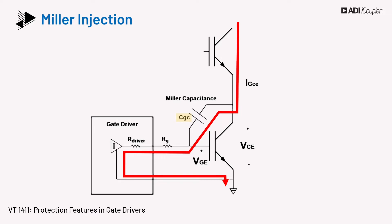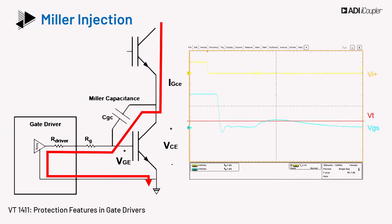The low side switch is turned off before turning on the high side of the device. During high side turn-on, the VCE of the low side changes from zero to some bus voltage value. The high slew rate on VCE causes current to flow through CGC, given as I = CGC × dVCE/dt. This induces a voltage spike at the gate of the power switch, known as Miller injection.